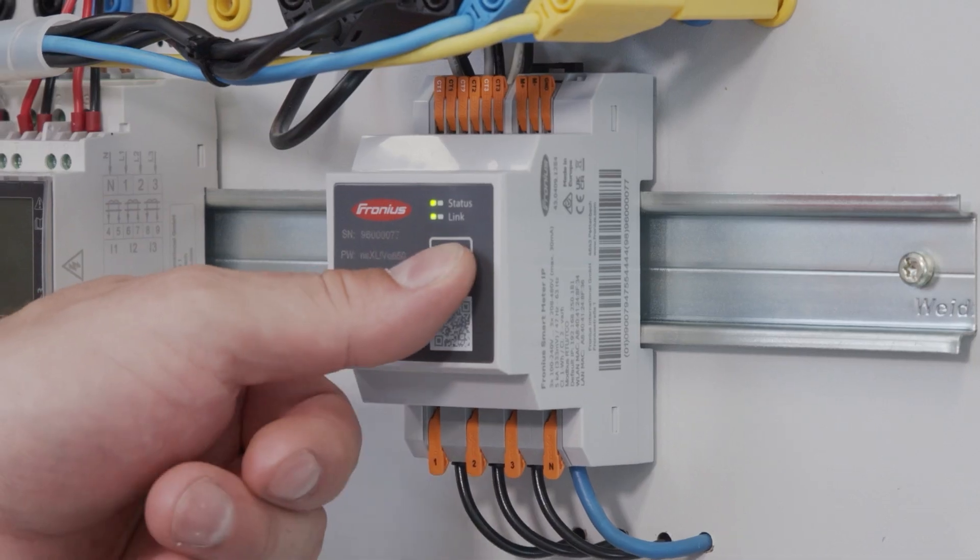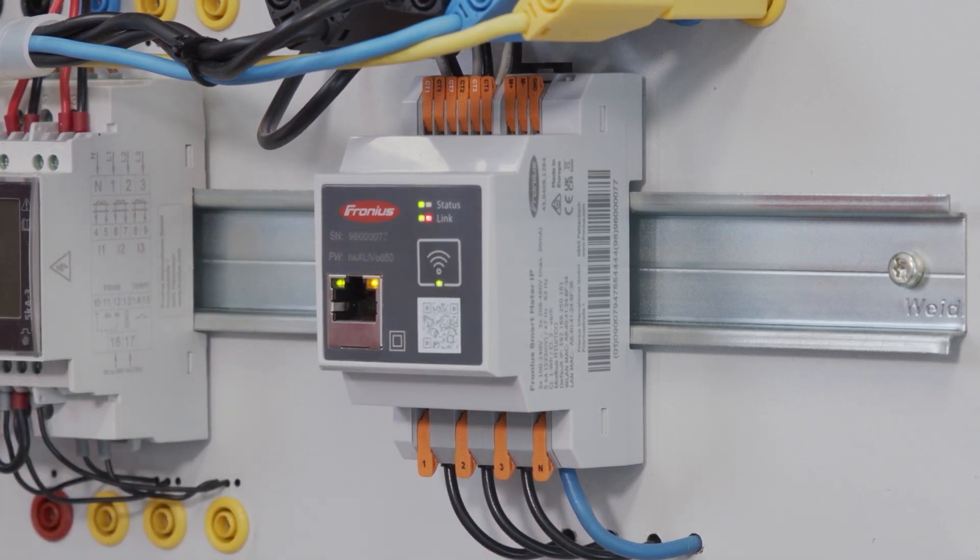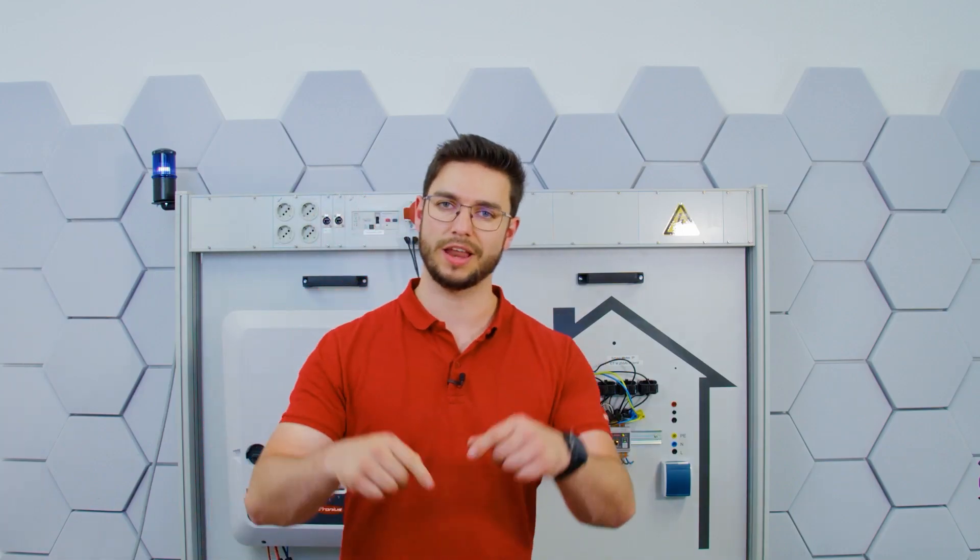First of all, I want to talk to you about the Modbus address. For this to be able to change, we need to activate the WiFi access point by pressing the WiFi symbol button for two seconds. Then we can see the link LED is blinking, which indicates that the access point is open, and we head on into our laptop in order to connect with the web interface.